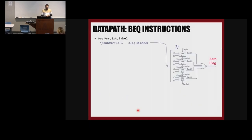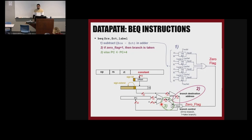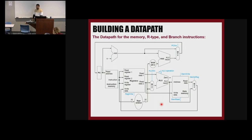How a branch works: we have a subtraction, we subtract two registers, we get the zero flag, then we calculate the address, and the multiplexer is chosen based on that zero flag. If it's zero, we choose PC plus 4. If it's one, we go to the branch target address. Putting everything together, this is the part we added to the data path — the branch logic — and then we have the PC source.